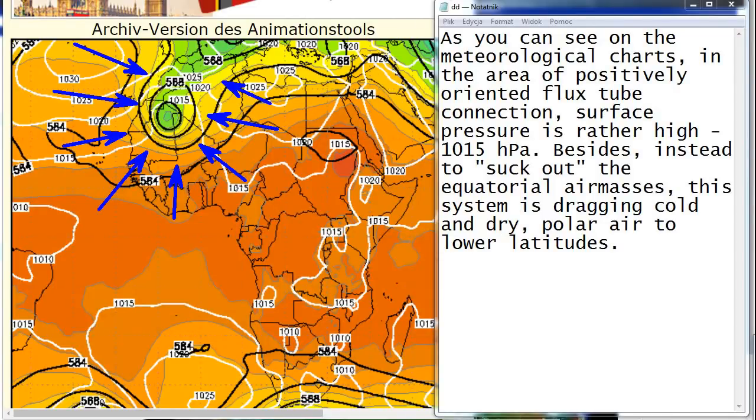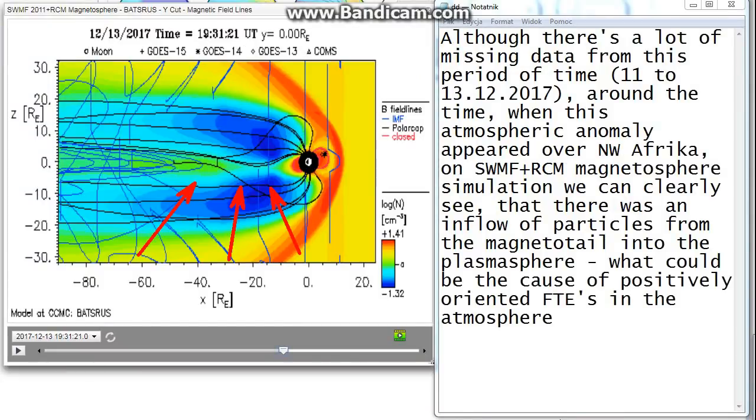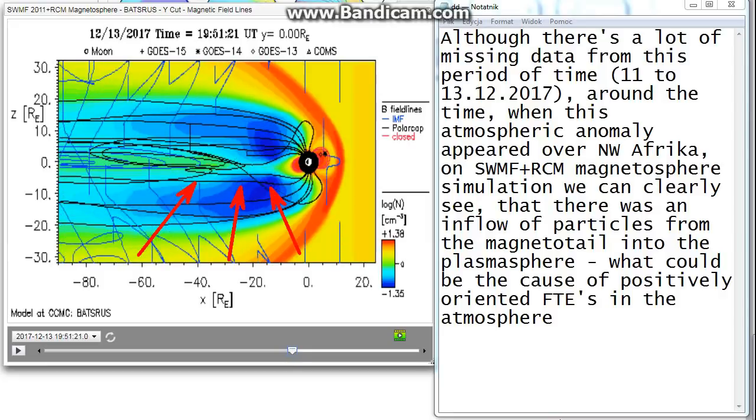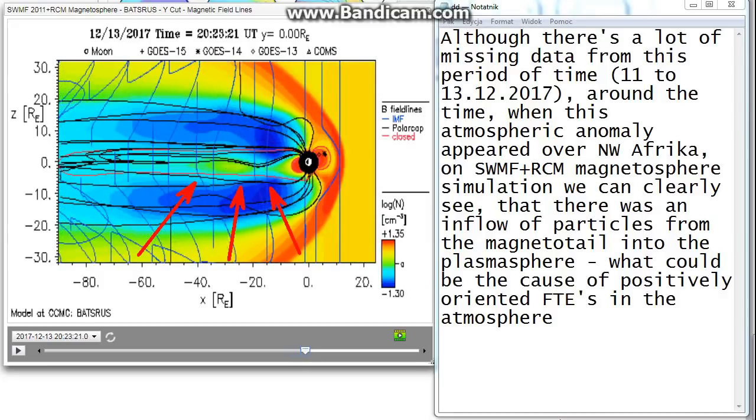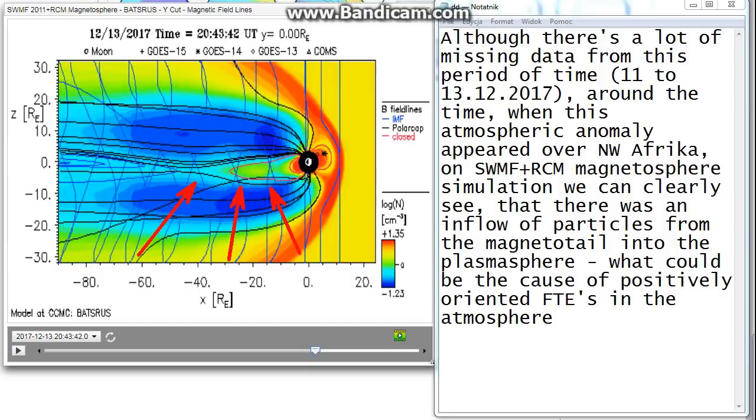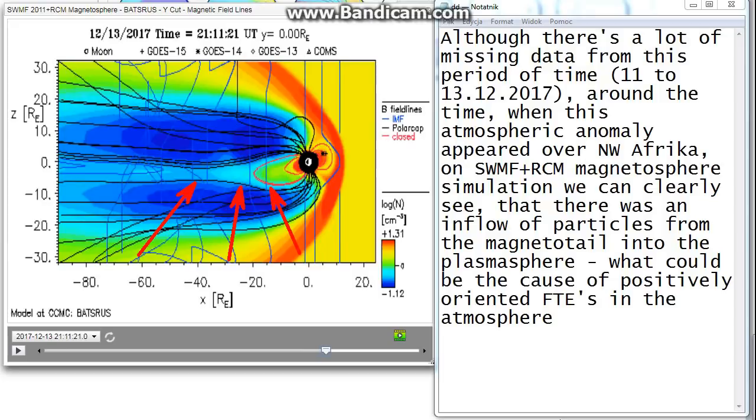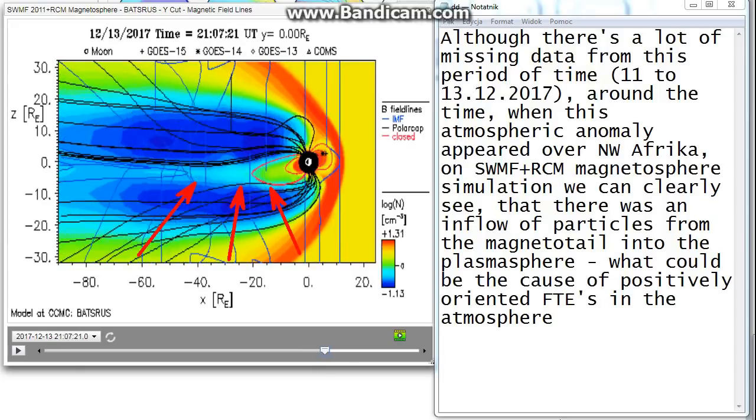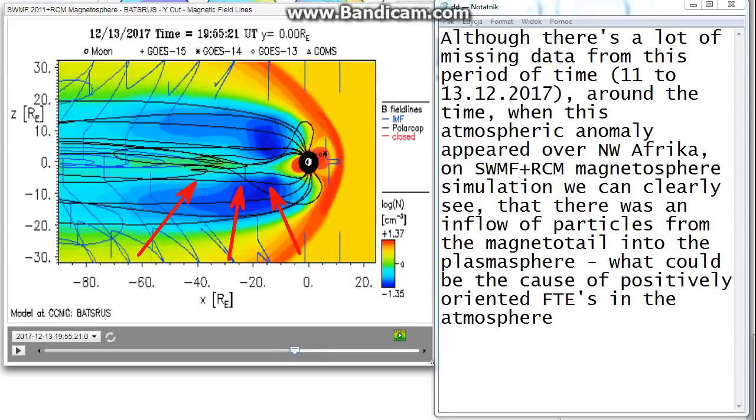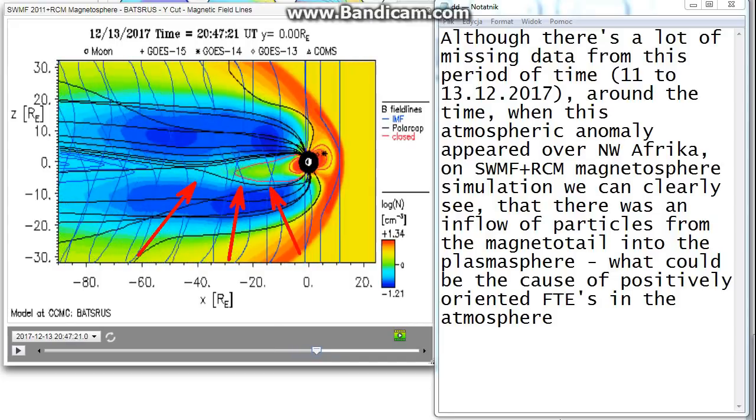As you can see on the meteorological charts, in the area of positively oriented flux tube connection, surface pressure is rather high, 1015 hectopascals. Besides, instead to suck out the equatorial air masses, this system is dragging cold and dry polar air to lower latitudes. Although there is a lot of missing data from this period of time, 11 to 13 December 2017, around the time when this atmospheric anomaly appeared over northwestern Africa on SWMF plus RCM magnetosphere simulation, we can clearly see that there was an inflow of particles from the magneto tail into the plasmosphere. What could be the cause of positively oriented FTEs in the atmosphere?